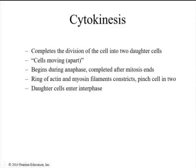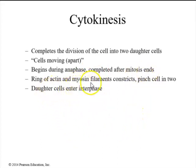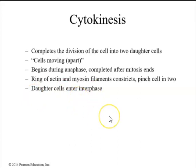Finally we have cytokinesis, which completes the division of the cell into two separate daughter cells. Cytokinesis literally means cells moving apart. It begins during anaphase and is completed after mitosis ends. A ring of actin and myosin filaments constricts and pinches the cell into two separate cells. Once we have two new cells, the daughter cells will then enter their own interphase. That is chapter two on cells and mitosis.